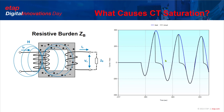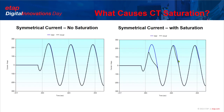The main driver of CT saturation is the current passing through the primary winding. CT saturation can be caused by different components of the fault current, such as the symmetrical component, the asymmetrical component (also known as the DC component), as well as the harmonic content of the current passing through the primary side of the CT.